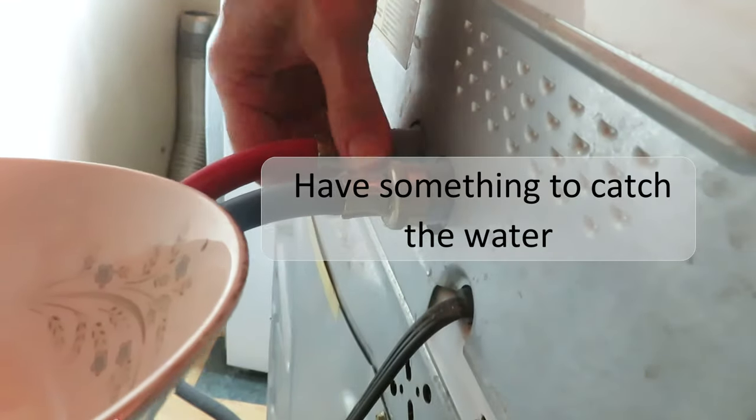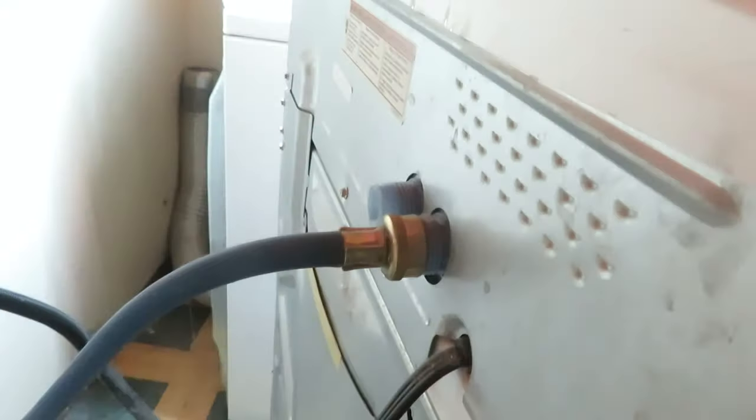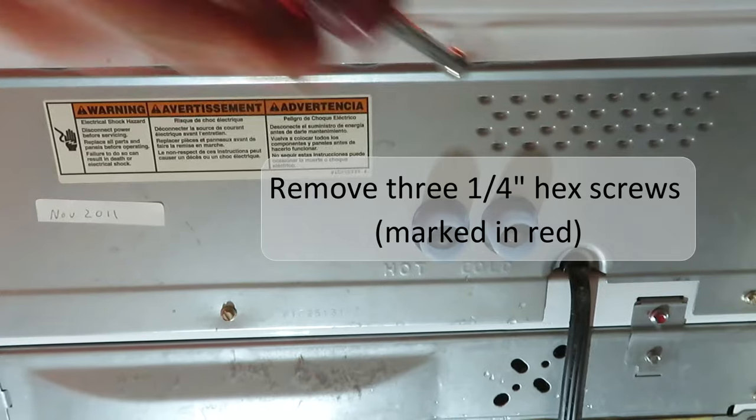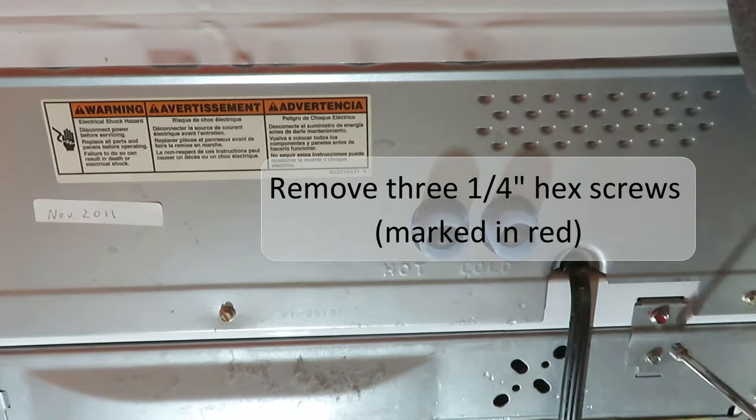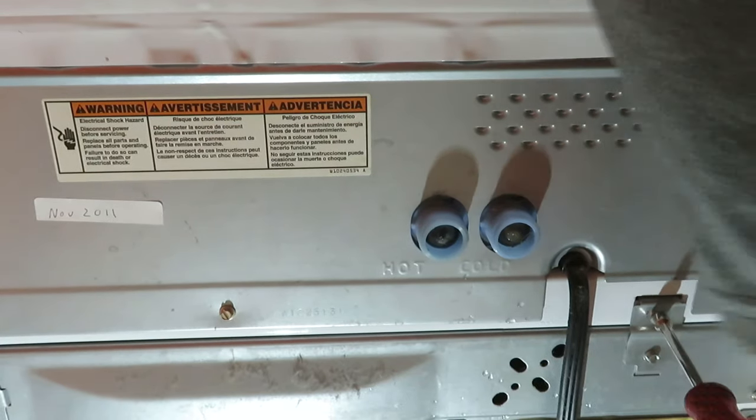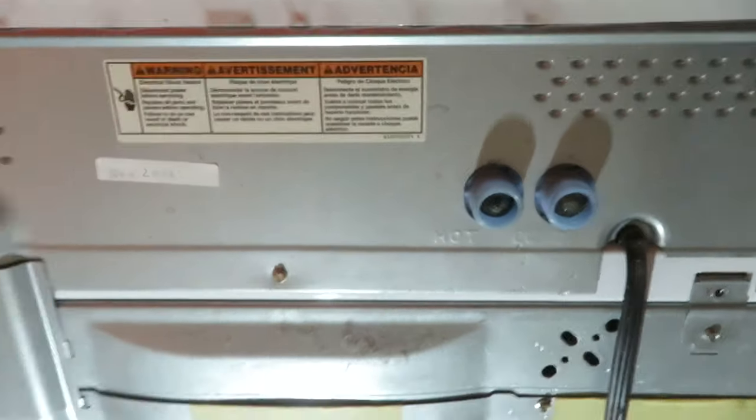Pull the hoses off. I'm going to be working in a tight area to show that it's possible to do this job without moving the machine out into an open area. Inevitably some water is going to come out of these hoses so you may want to put a small bowl or pail down there. The machines made by Whirlpool and sold under a bunch of names have just three quarter inch hex screws that you need to take off. I painted a red mark to make it easy to see. This third one is a little plate there that you have to remove as well.